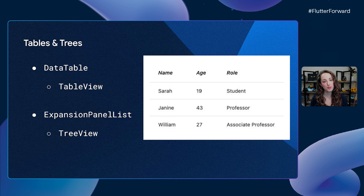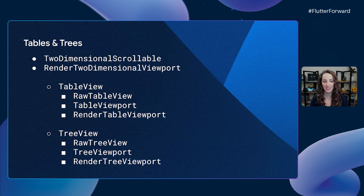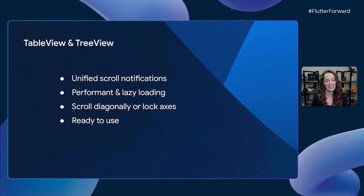So what we've been working on is a table view and a tree view widget, and not only those, but a whole bunch of other things in between. I have to note, this is subject to change — the design has not been finalized yet. We have a two-dimensional scrollable as well as a two-dimensional viewport base. These are meant to not only be used by the table and tree implementations, but also for other developers to extend or build on top of, whatever they can imagine. What we've built on top of them is the tree view and the table view API, and even a tree table view. They're designed to just work right out of the box without all of the special handling mentioned earlier. They'll have unified scrolling notifications, lazily lay out their children, scroll along locked axes, or optionally scroll diagonally and everywhere in between.